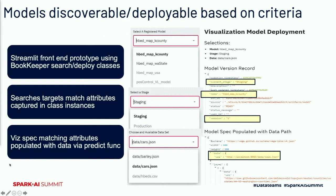We can track our visualizations, we can search them with different criteria — the same way we might search through an MLflow model registry for models that meet certain criteria or answer the problem we're posing — and we're able to select a visual representation and then independently pass in a chunk of data that we want to interpret.